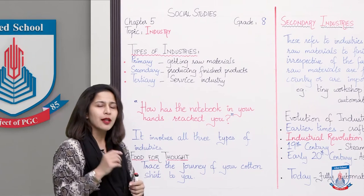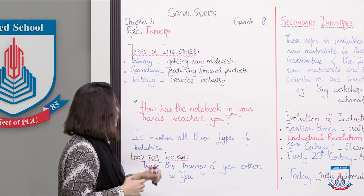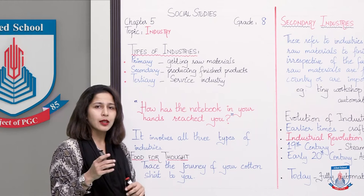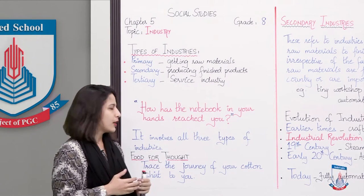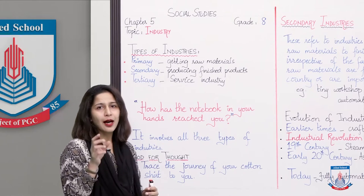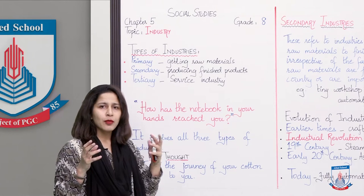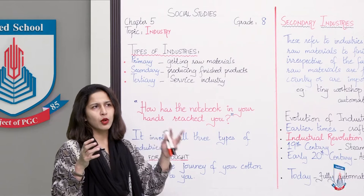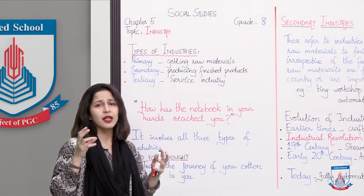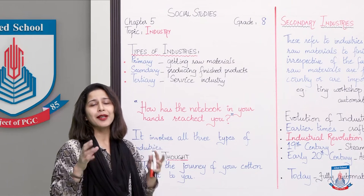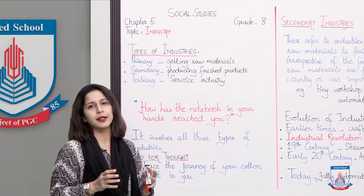Now, my next question — it's just a food for thought for you people. Video ko rokiye, pause kariye, aur sochiye that how your cotton shirt has reached you. You must be wondering — cotton, cotton field, textile industry. Yes, you're right. That's the pathway. That's how all three forms of industries are linked.